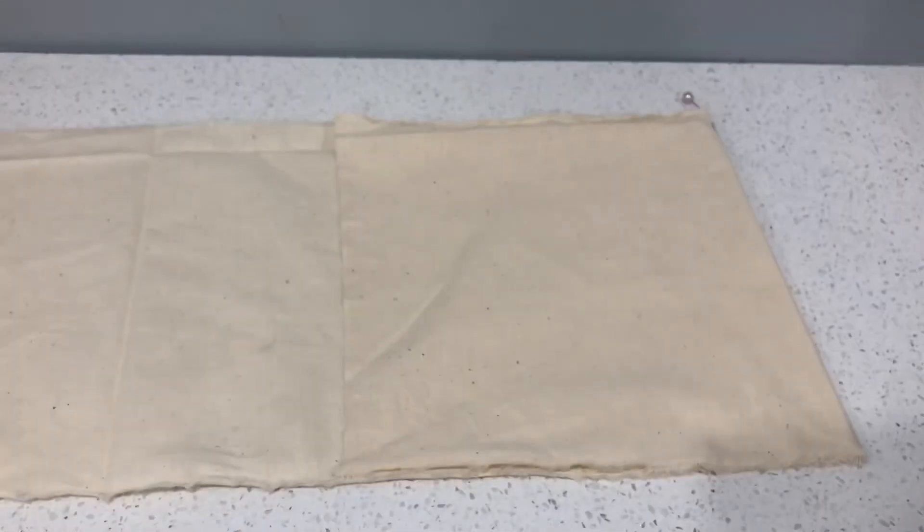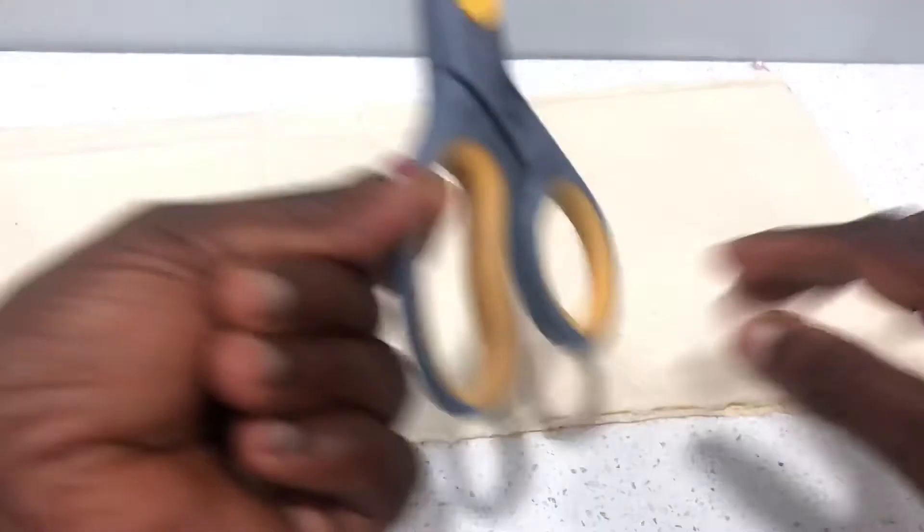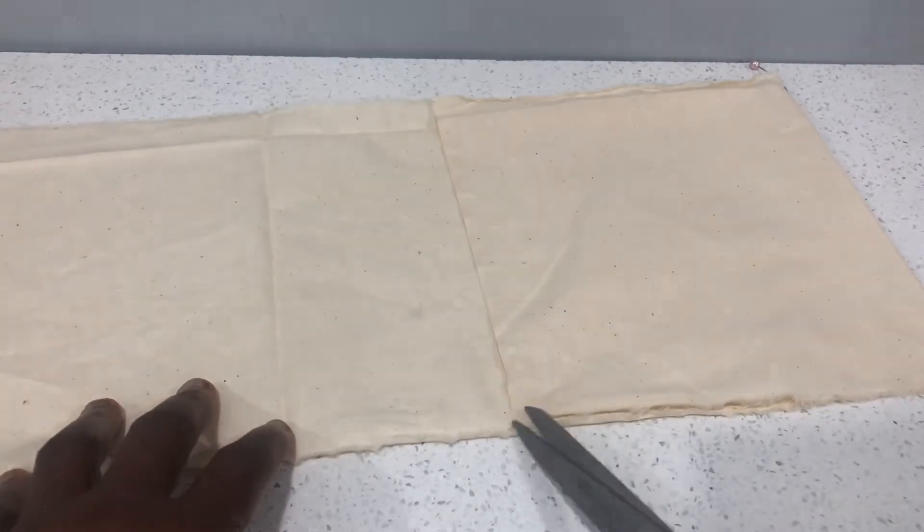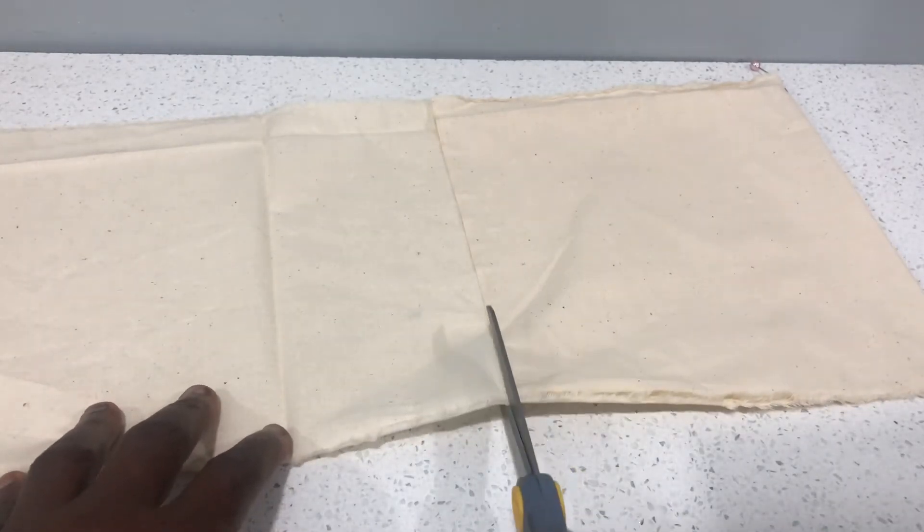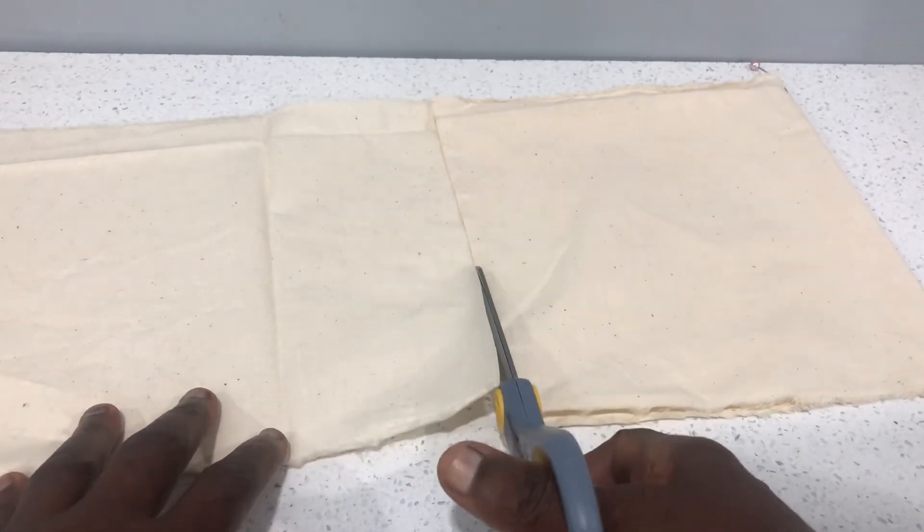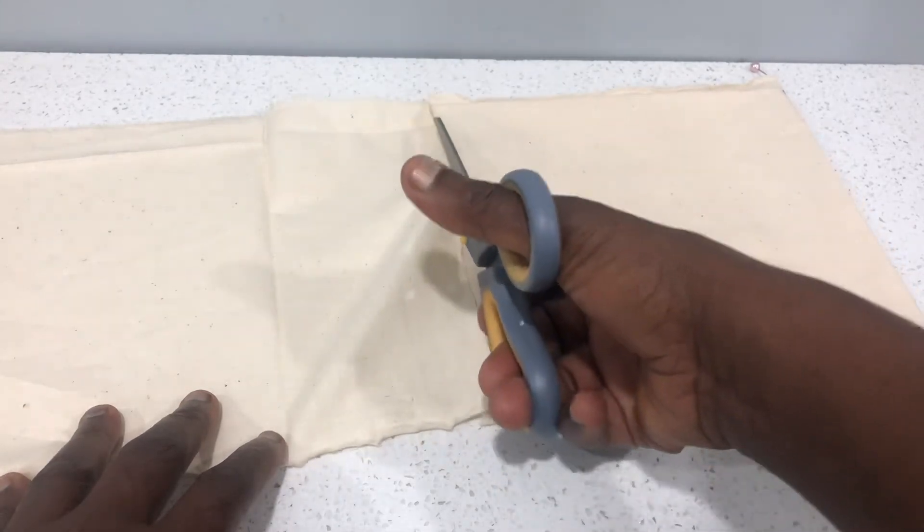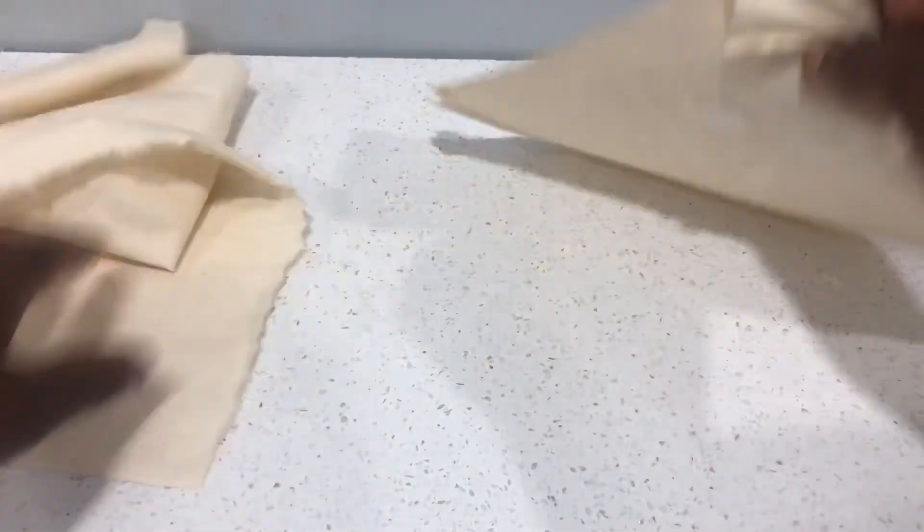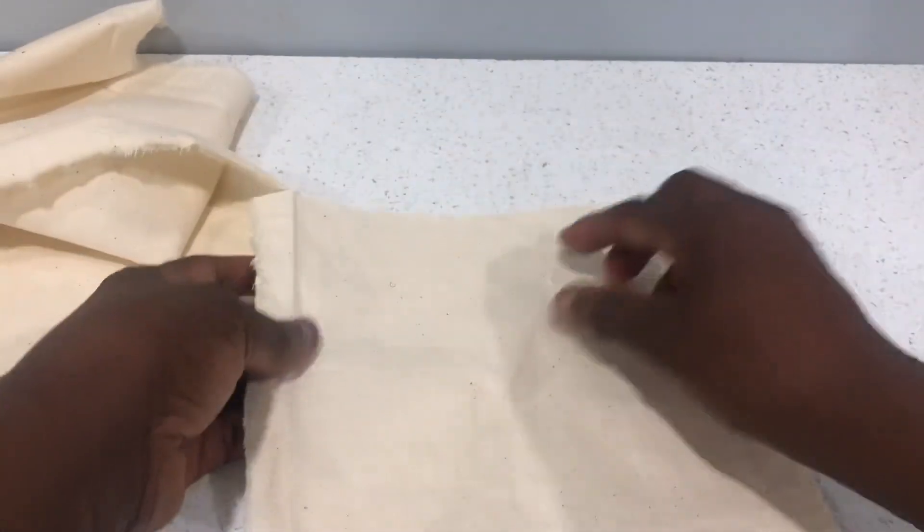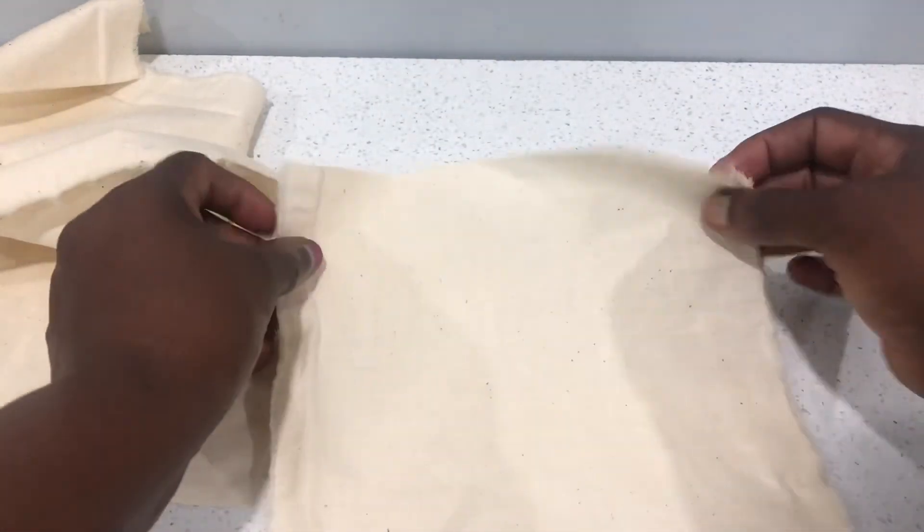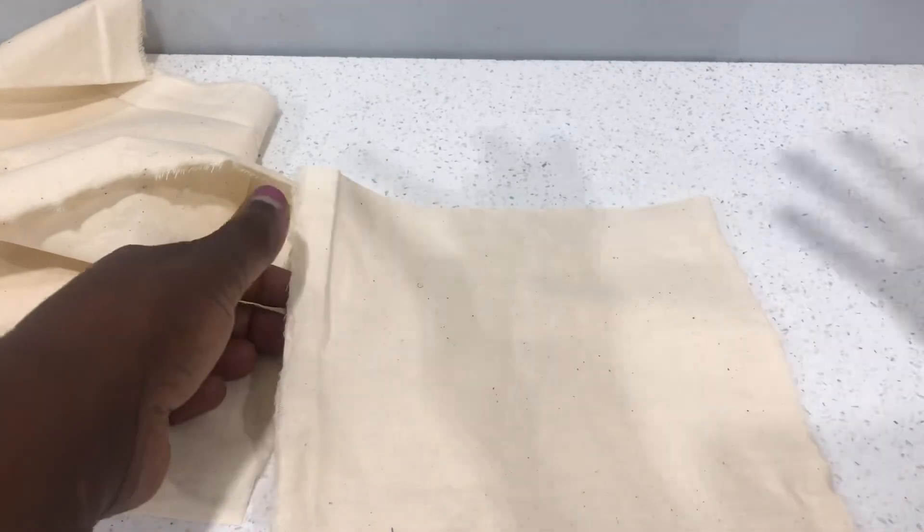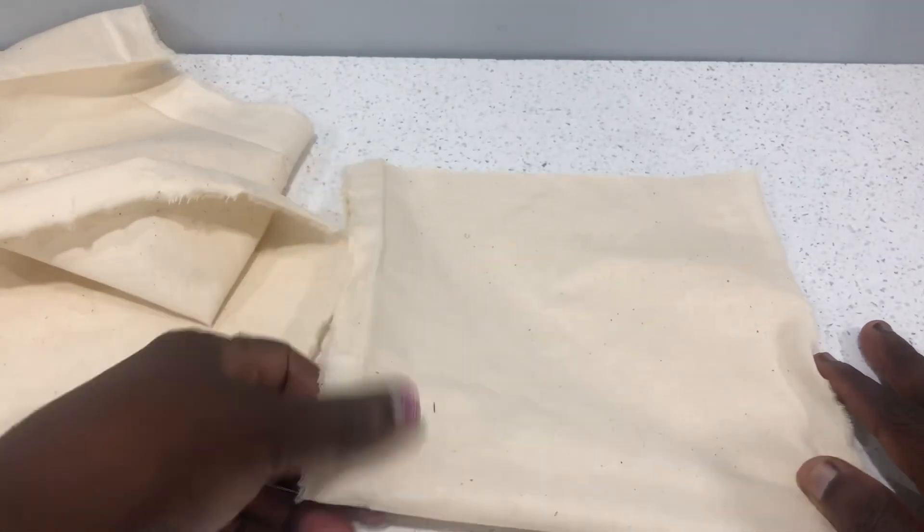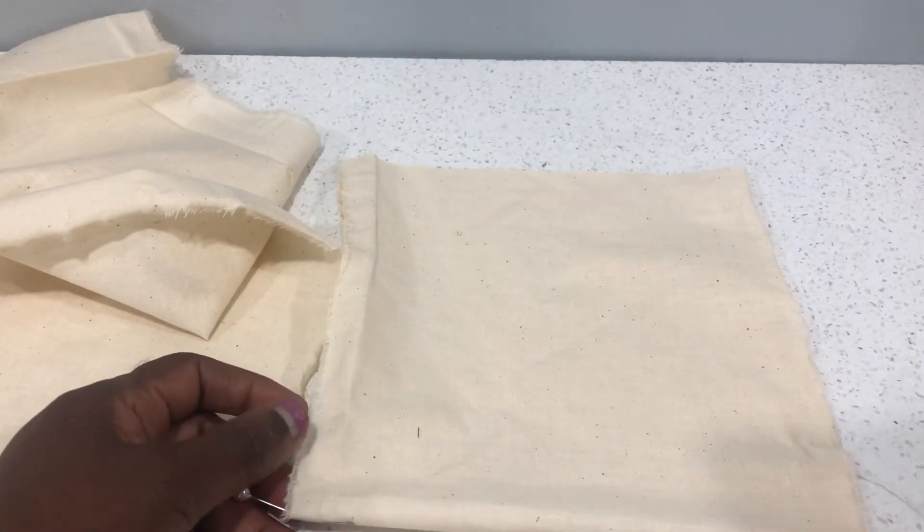So you go ahead and you cut that right here next to the selvage. That way you didn't have to do too much measuring—you've been able to create a perfect square, and this is a double to create your bag or whatever else you intend to use it. Thank you.